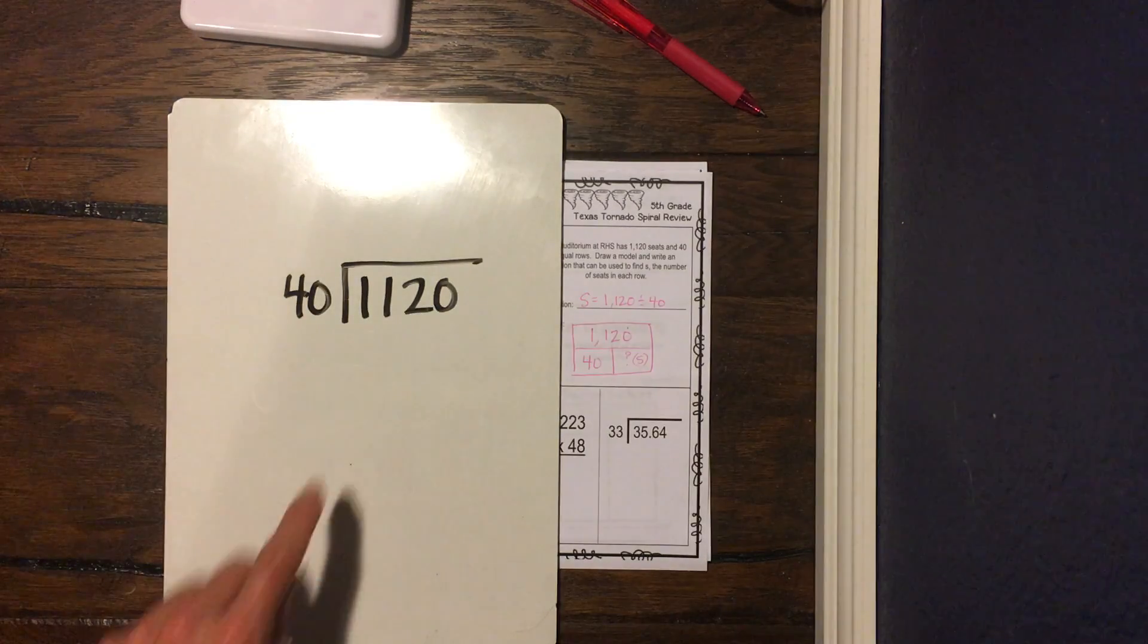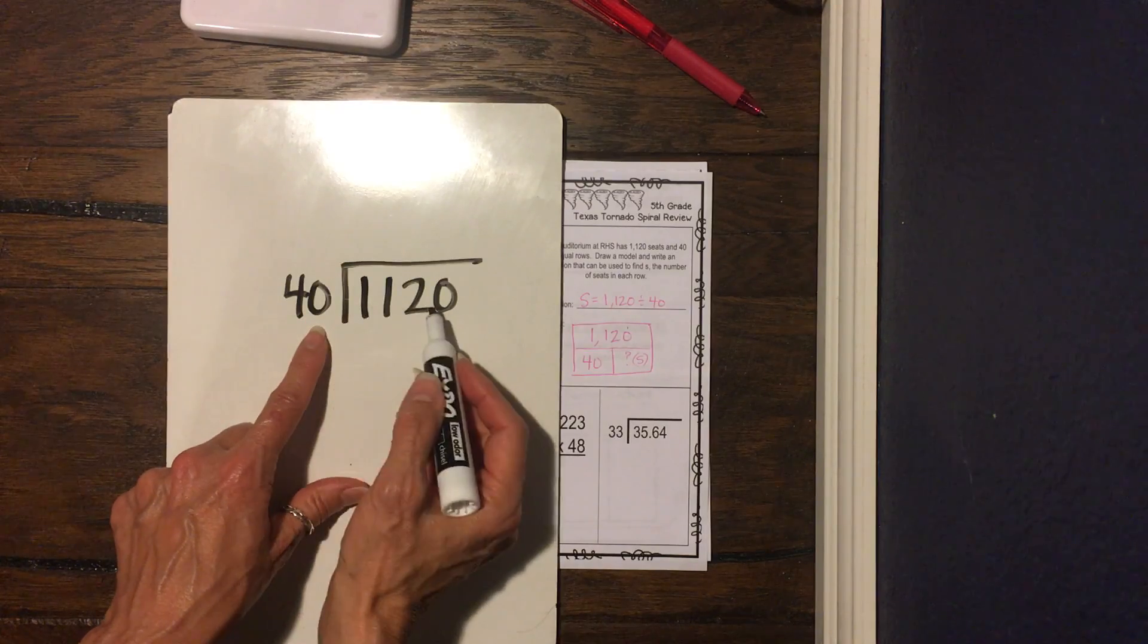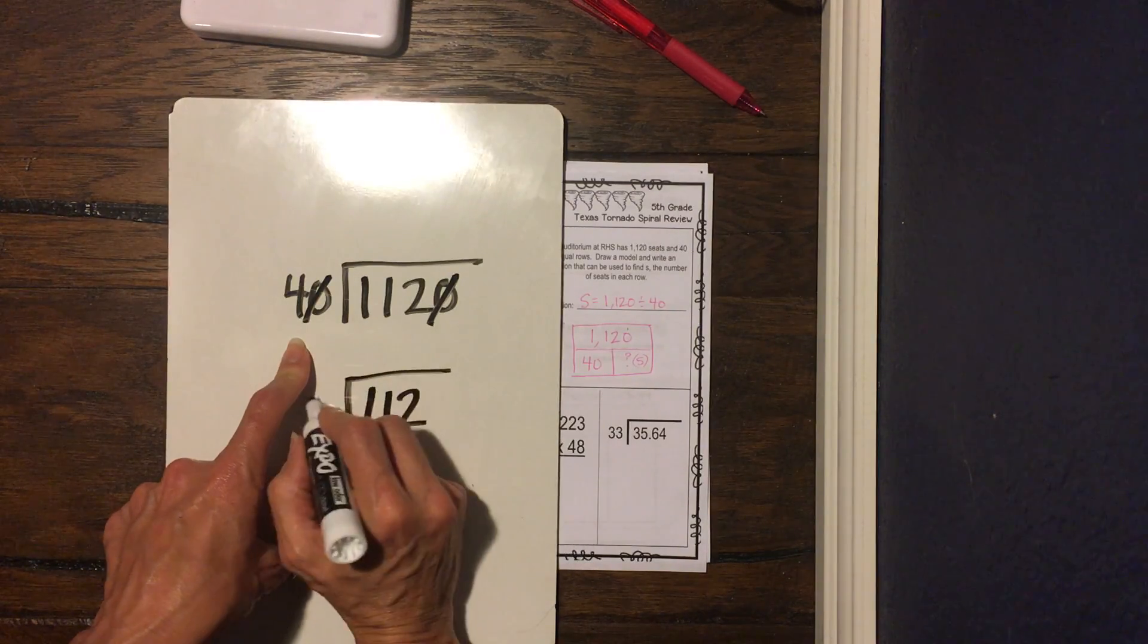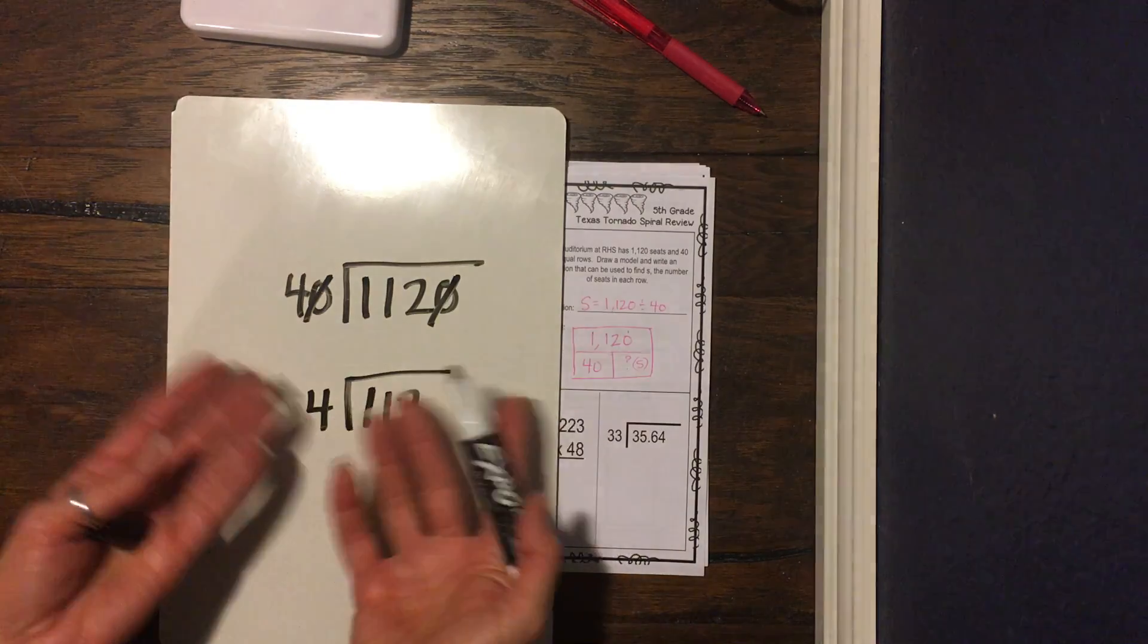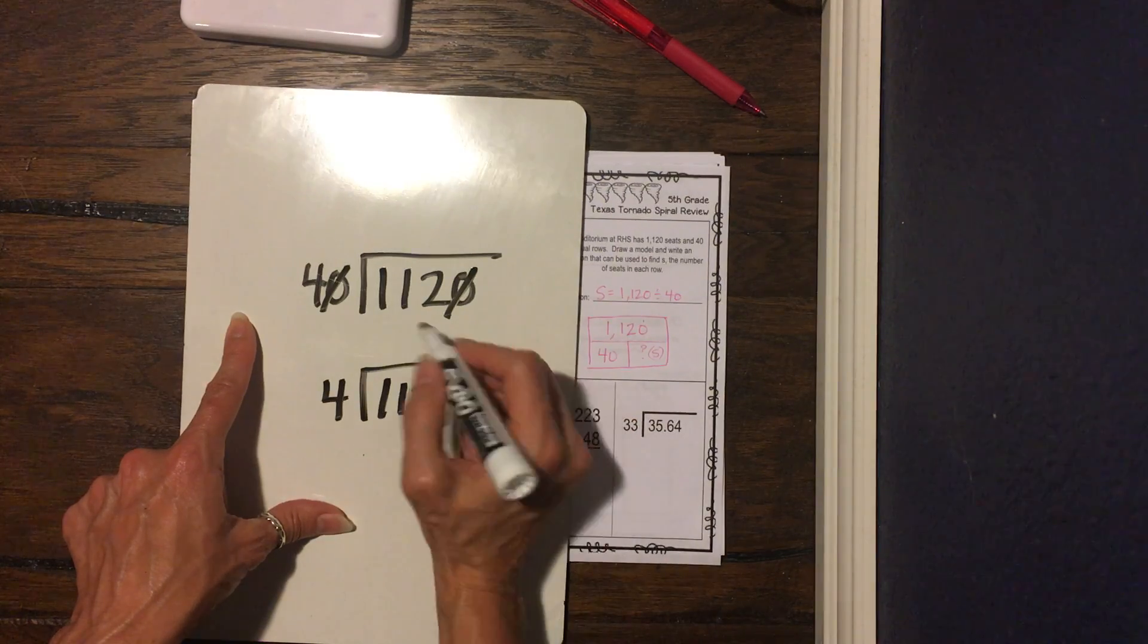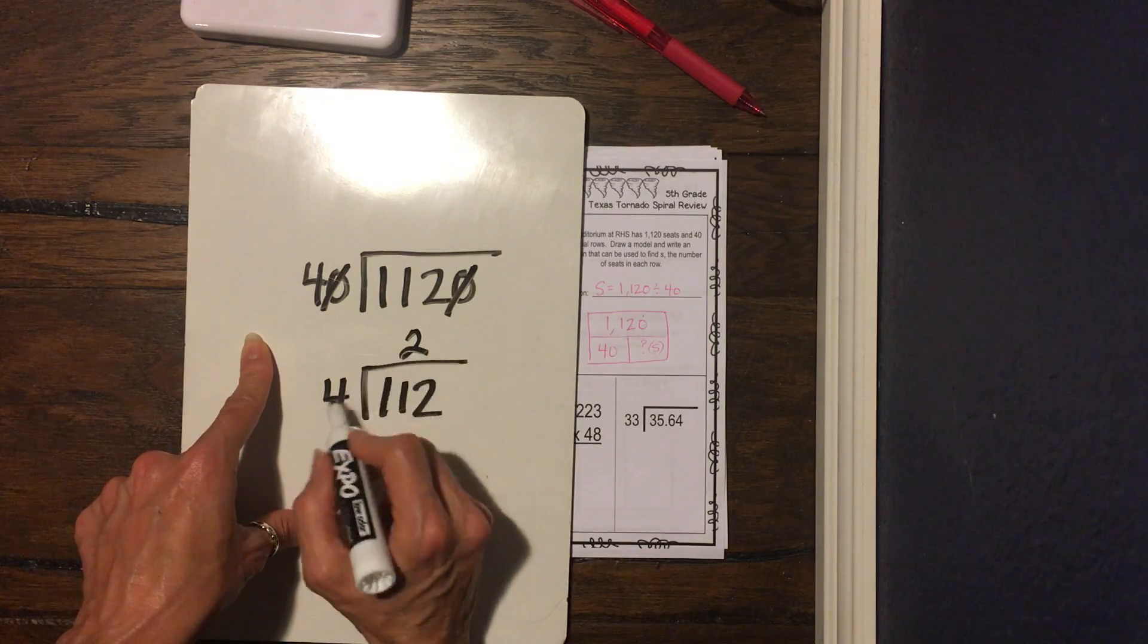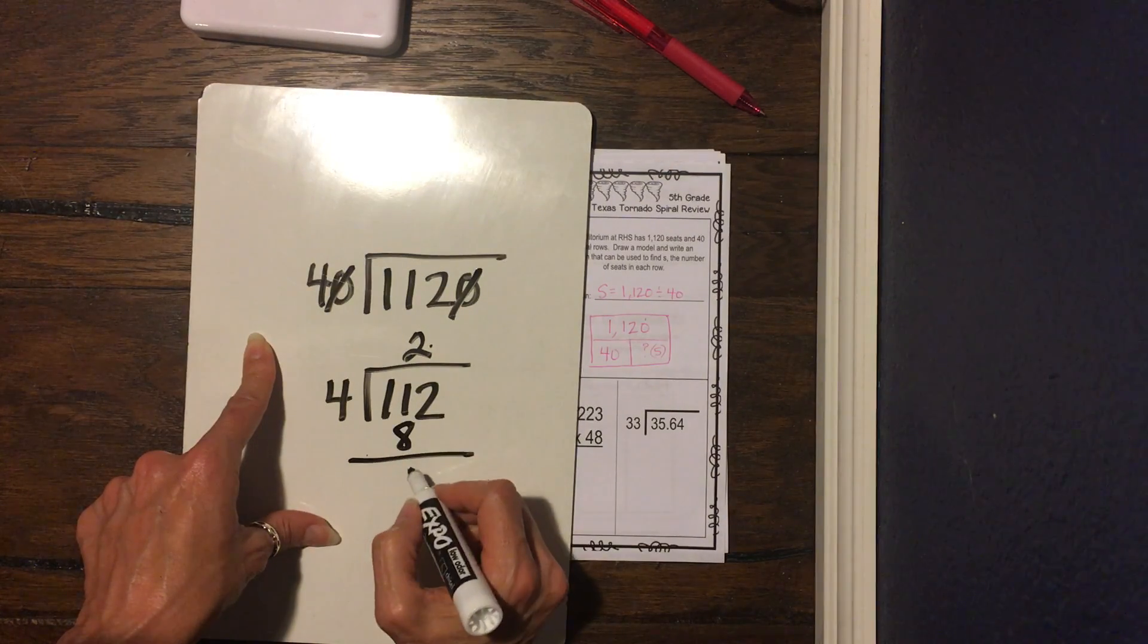Okay, now one thing we can do, just so you guys know, if both of our dividend and divisor have a zero, we can technically just cancel those out, and then we're only gonna have 112 divided by 4, and that's much easier to divide. Obviously, single digit is easier than double digit. So 4 goes into 11, how many times? 4, 8, 12, it's gonna go in twice. 4 doesn't go into 1, so our 2 needs to go above the 11. 2 times 4 is 8. We subtract. 11 minus 8 is 3.